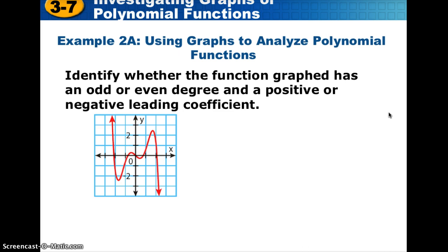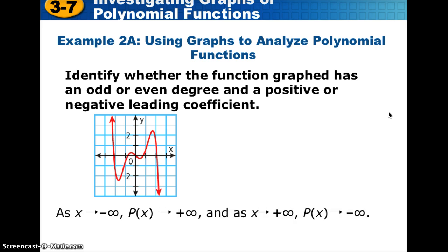Just as we start with a function to find end behavior, we can also start with the graph and determine what the function's definition must look like. In example 2a, the right-hand side goes in the negative y direction, and the left-hand side goes in the opposite — positive y direction. This tells us it's an odd-degree function with a negative leading coefficient. As x goes to negative infinity, p of x goes to positive infinity, and as x goes to positive infinity, p of x goes to negative infinity.